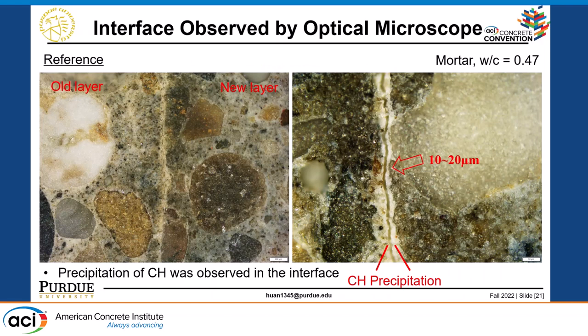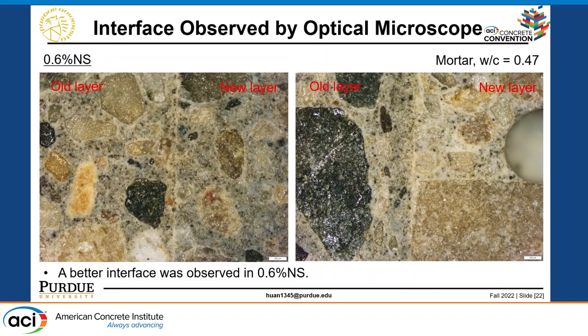Apart from micro-CT scanning, we also did optical microscope observation. In the reference mortar sample, there is an interface between the two layers. Looking closer, there are yellowish products, which we believe to be the precipitation of calcium hydroxide — the byproduct of cement hydration. This is what we expected. But if we look at the 0.6% nanosilica sample, the interface was much better, much denser, and the quality is much better than the reference sample.